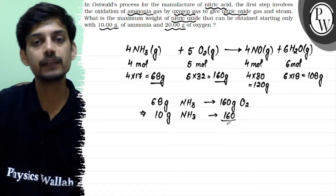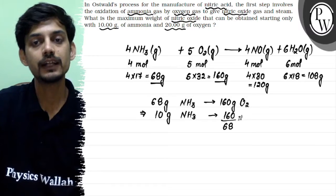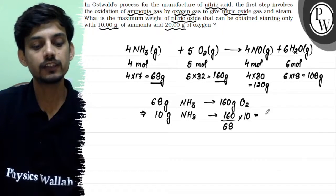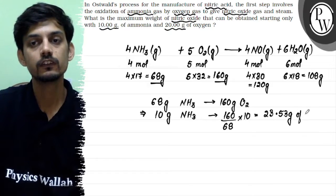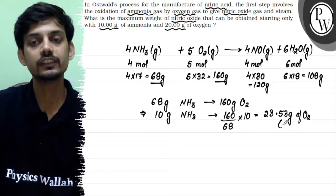For 10 grams of ammonia we will be needing 160 divided by 68 multiplied by 10, which comes out to be 23.53 grams of oxygen gas. So this much oxygen gas is required for complete oxidation of ammonia.